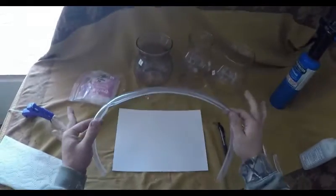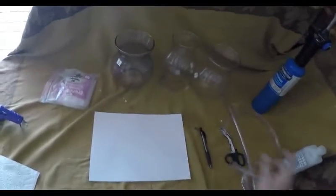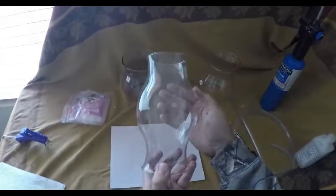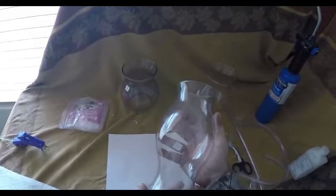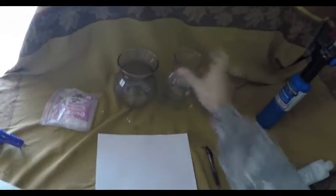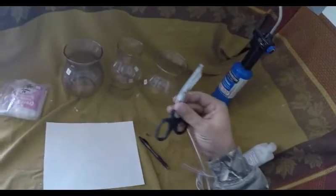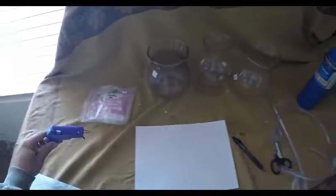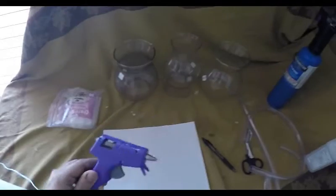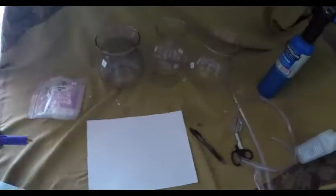This is all we need. Some tubing, these glass lamps, old lamp caps that you can get from Goodwill for 99 cents, a piece of paper, a pen, some scissors, and a glue gun. I guess it's purple. I don't have much more than 5 bucks to spend, so this is what I got.